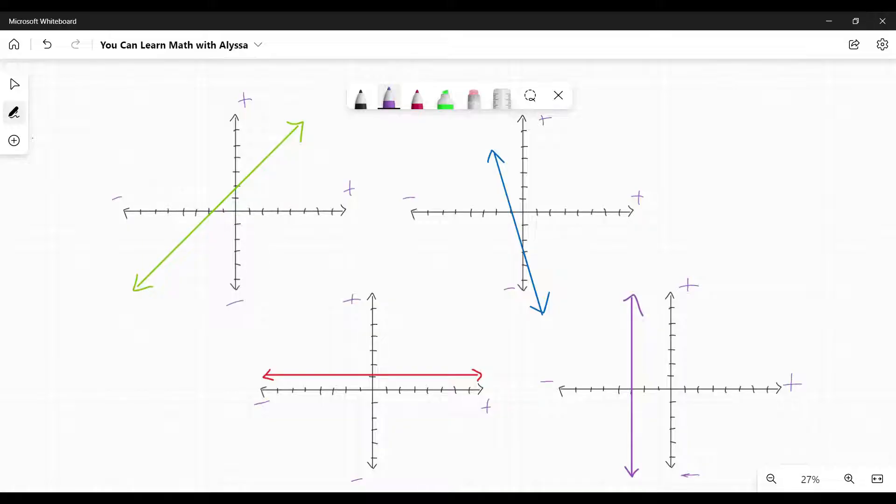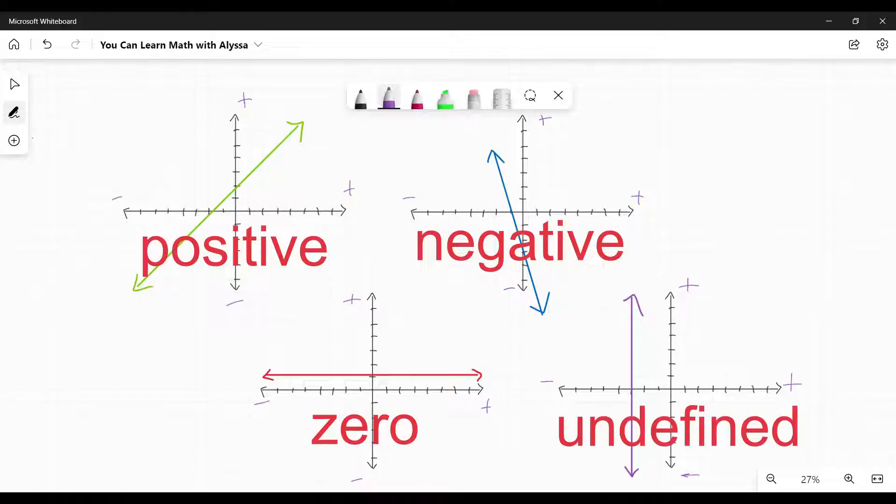The four main slopes here would be positive, negative, zero, or undefined, and they all come from measuring these points.